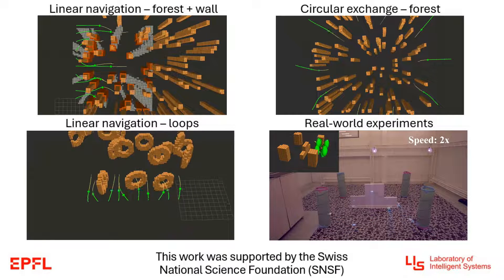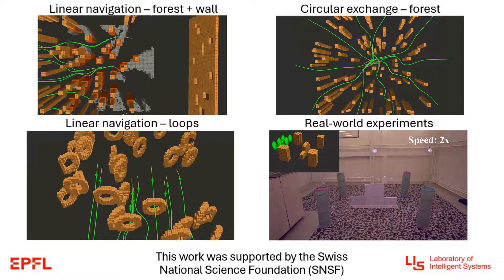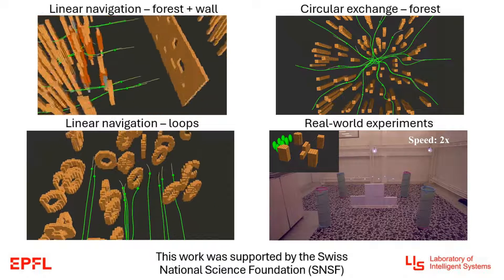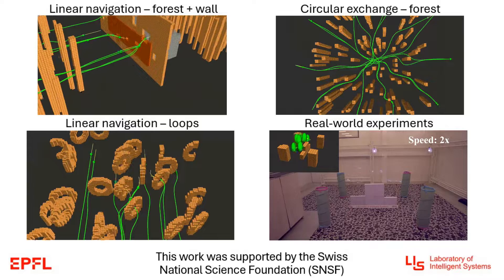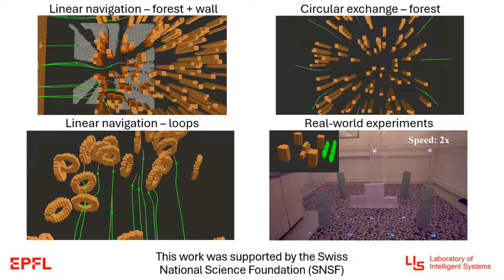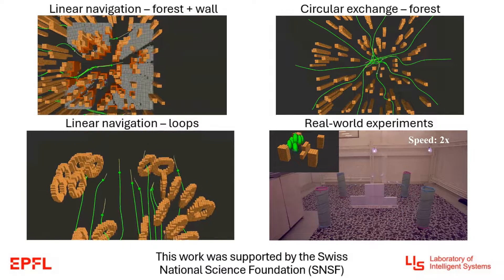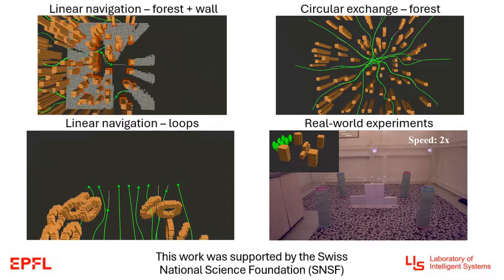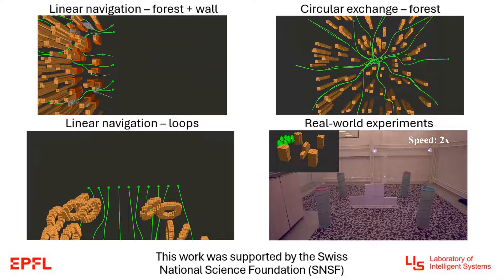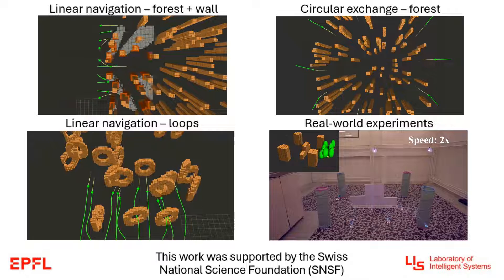In conclusion, we propose an aerial swarm planner that is decentralised and can handle communication delay and packet loss. It is shown through multiple simulations to outperform the state-of-the-art in navigation speed and safety due to explicitly taking into account the unknown part of the environment. It is also tested on real drones to check the dynamic feasibility of the generated trajectories.